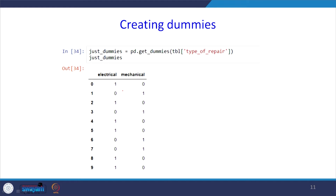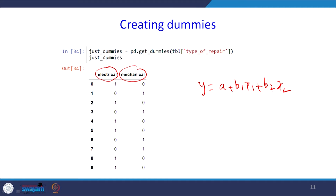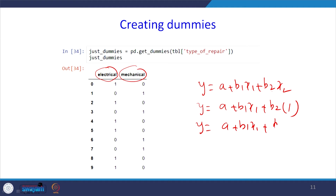There are two columns — the dummy variables. Both represent the same information, so we can use either for our regression model. When electrical = 1, the equation can be written as y = a + b1*x1 + b2*x2, where x2 = 1 gives the equation for electrical repair, and x2 = 0 gives the equation for mechanical repair (i.e., y = a + b1*x1).